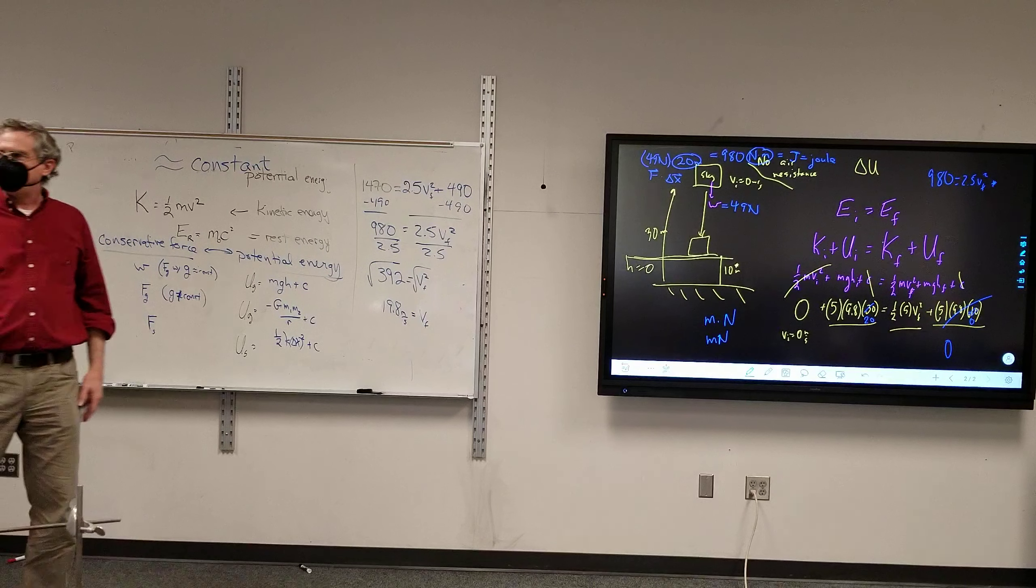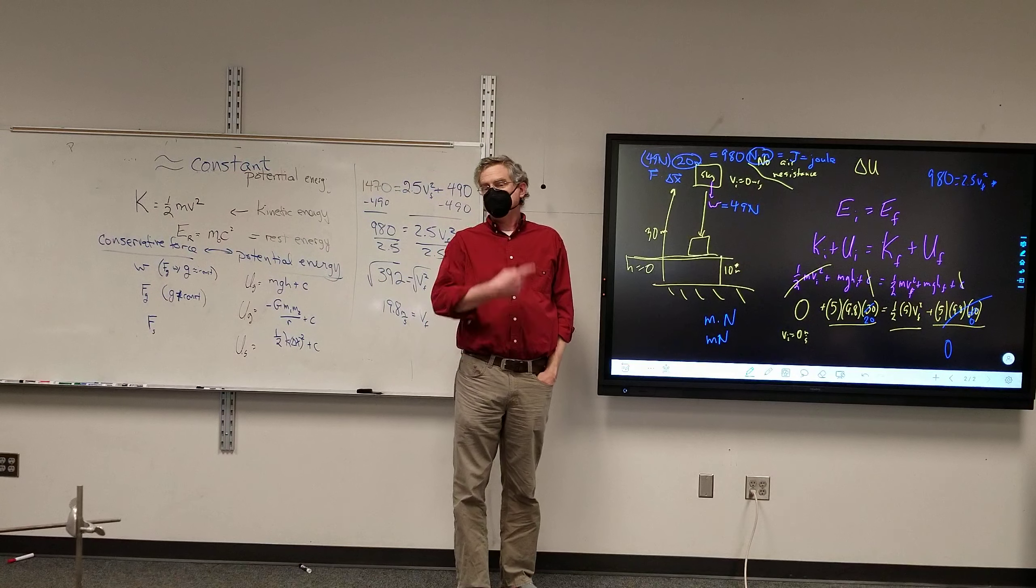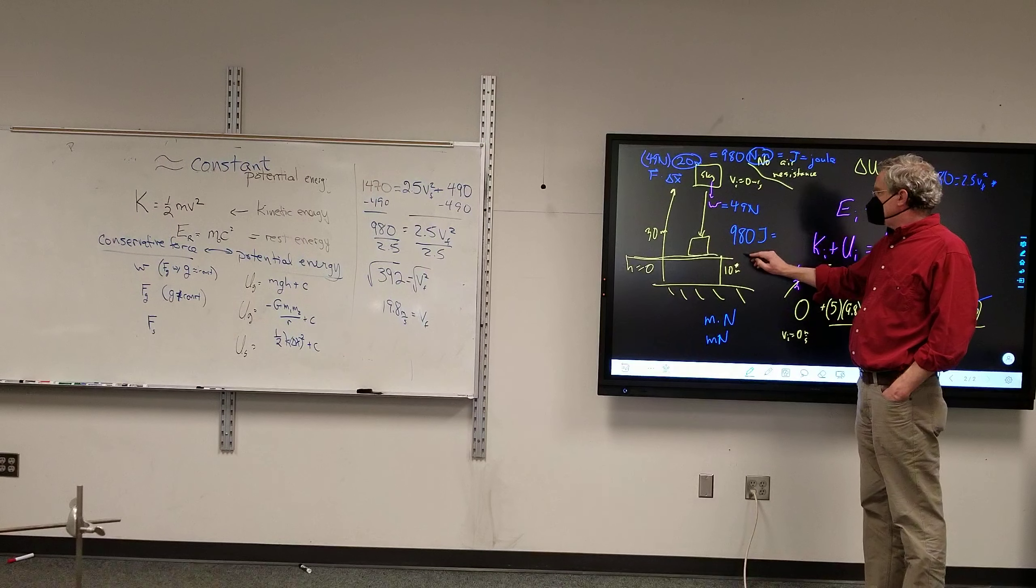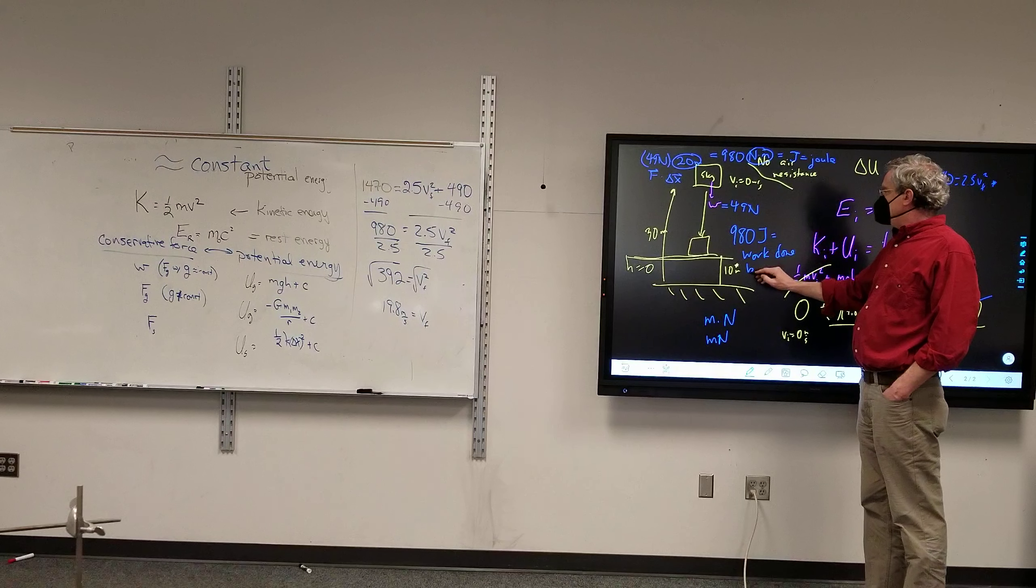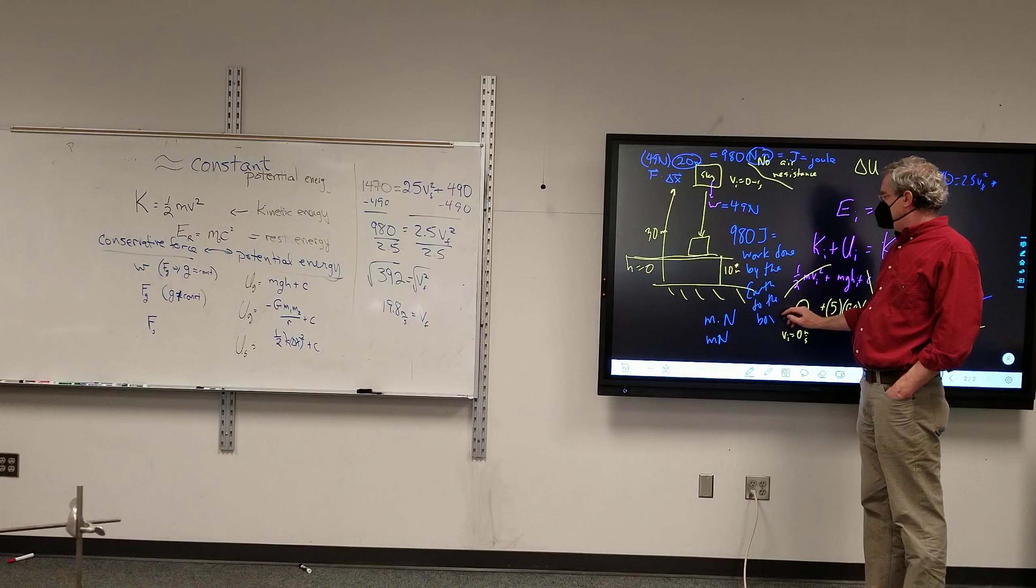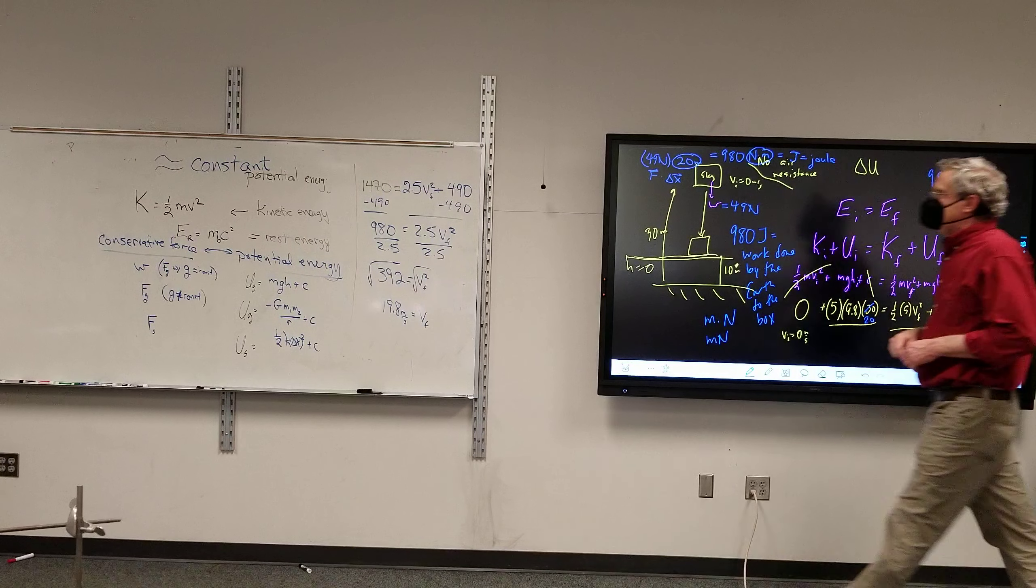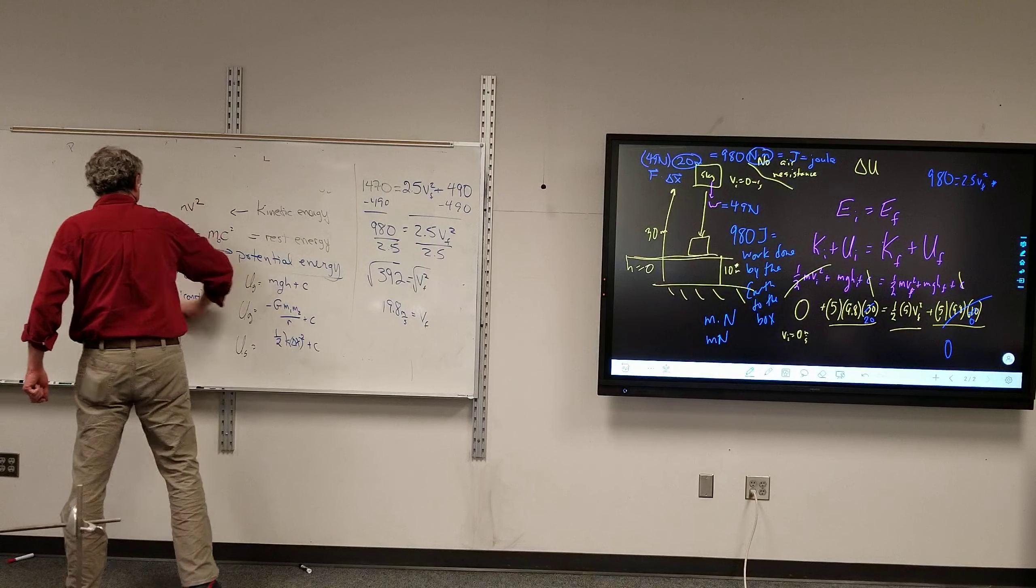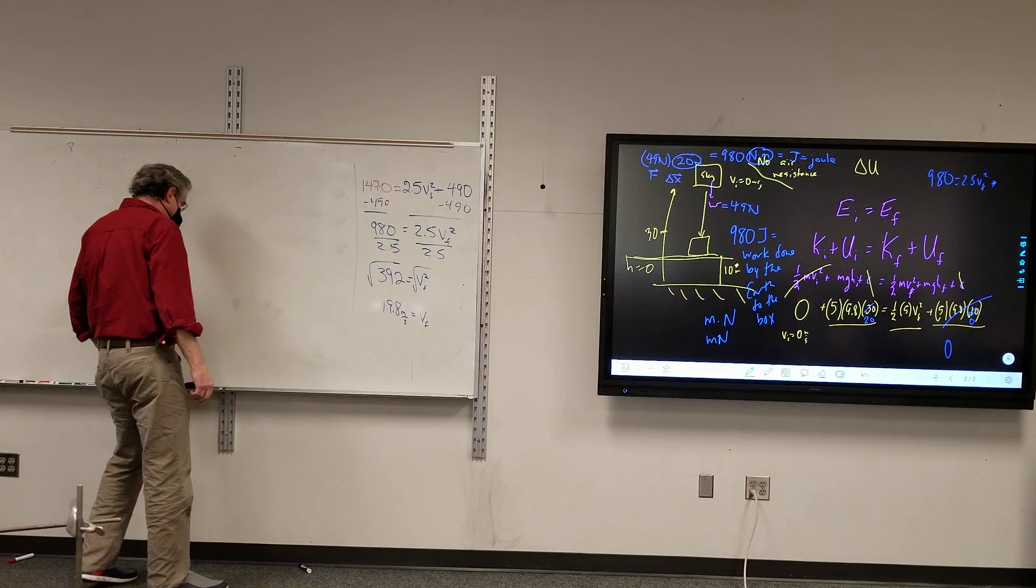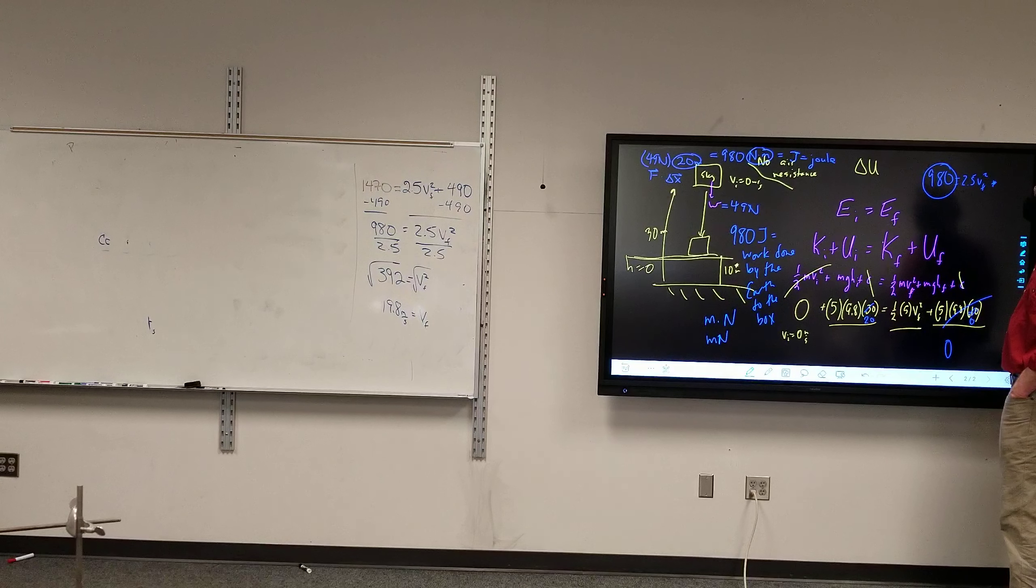So what was that, what we were solving for over there? The force times the displacement. Why? Because this 980 joules is the work done by the Earth. This is the work done by the Earth to the box. 980 - we've got a 980 there also. What a coincidence.